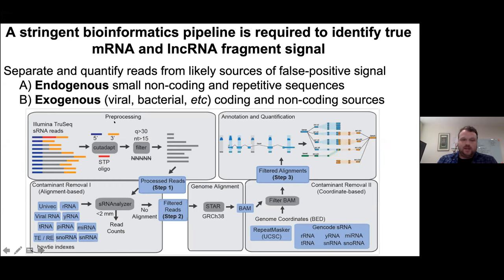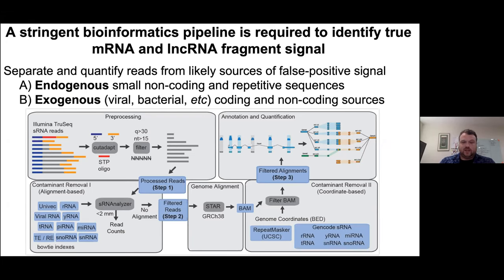To address this, I developed a method where you process reads as normal, align to univec contaminants, viral RNAs, and bacterial RNAs, and anything that doesn't align proceeds to genome alignment. Then a second round of filtering removes alignments corresponding to ribosomal RNAs, YRNAs, and other endogenous annotations before final quantification. I've since improved this pipeline to do all alignments in one step.